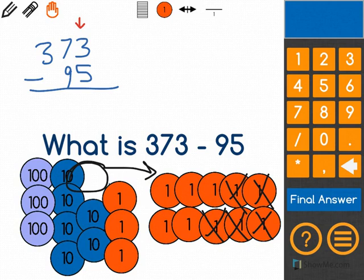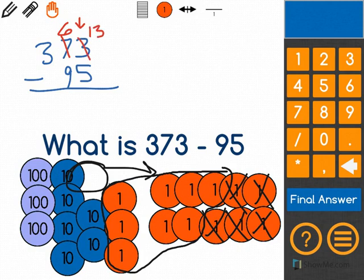I count and I have 1, 2, 3, 4, 5, 6, 7, 8 left over. I do the same thing with my columns and 13 minus 5 is 8.